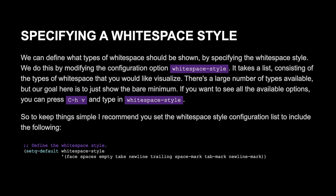We can define what types of whitespace should be shown by specifying the whitespace style. We do this by modifying the configuration option whitespace-style. It takes a list consisting of the types of whitespace that you would like to visualize. There's a large number of types available, but our goal here is to just show the bare minimum. If you want to see all the available options, you can press Ctrl H V and type whitespace-style.